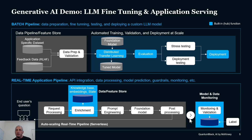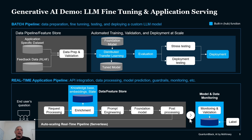There are essentially two pipelines we need to build. One is to build and tune the model; the other is to use the model. The first one takes your own data — potentially data collected from human and machine feedback — then prepares it, cleans it, makes sure it will generate the best results and doesn't contain proprietary data.